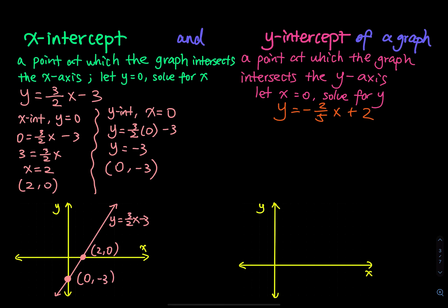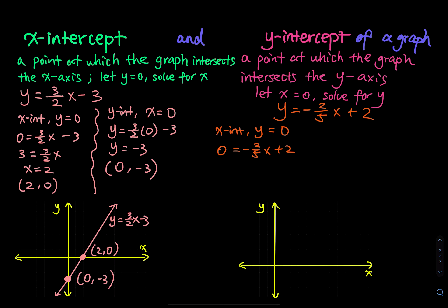Let's do the second example. To find the x-intercept, let y equal to 0: 0 = (-2/5)x + 2. Subtracting 2 from both sides gives -2 = (-2/5)x, so x equals 5. When x equals 5, y equals 0.